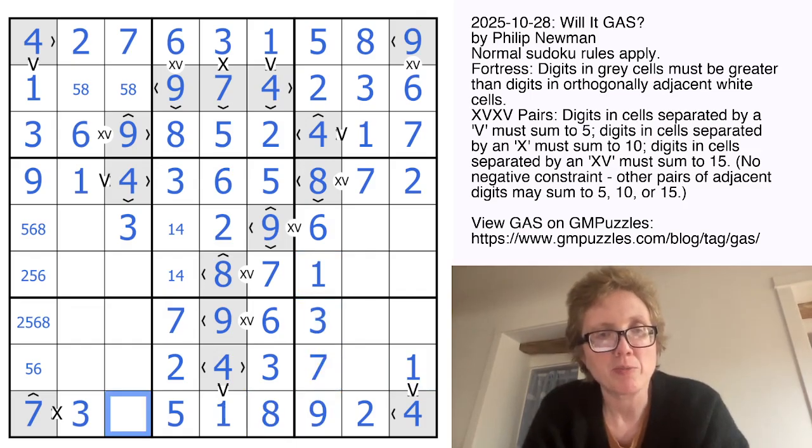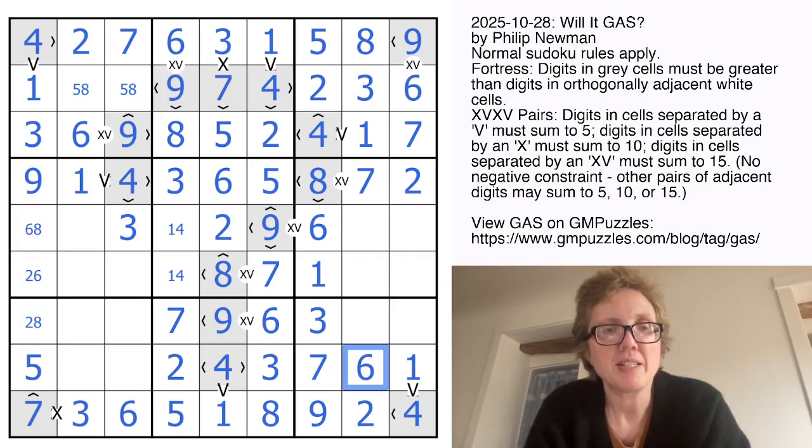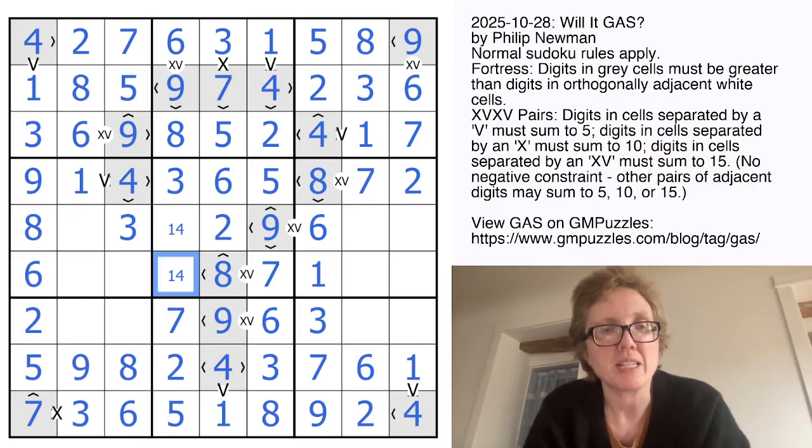3 and 7. My last digit in this row is now a 6. So these can't be 6s. That makes this a 5. And that resolves these digits. The 1 here also resolves these.